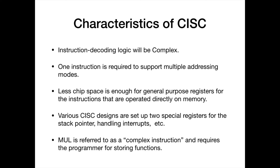Characteristics of CISC: In CISC, the instruction decoding logic will be a complex process. Only one instruction is required to support multiple addressing modes in the architecture. Addressing modes are the ways of accessing data from memory — for example, accessing directly as data or through a memory address. Less chip space is enough for general purpose registers for instructions that are operated directly on memory.